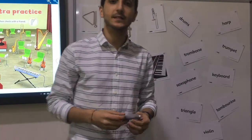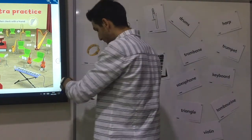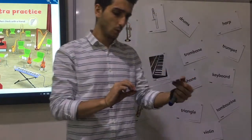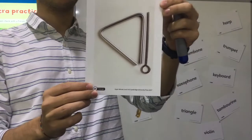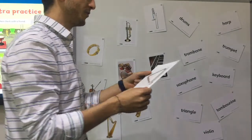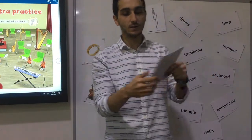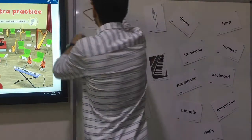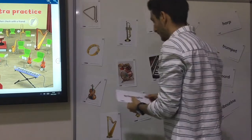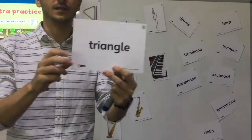Let's revise the vocabulary. The first one — what are these? These are triangles. Triangle. How can we write it? T-R-I-A-N-G-L-E. Triangle.